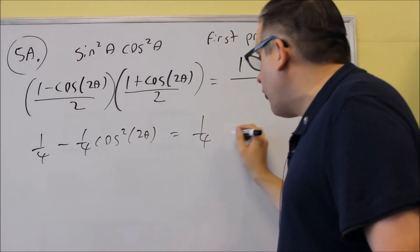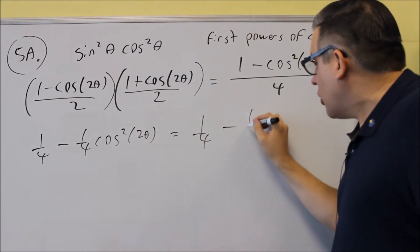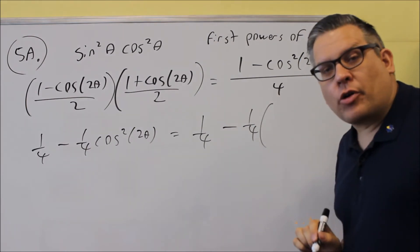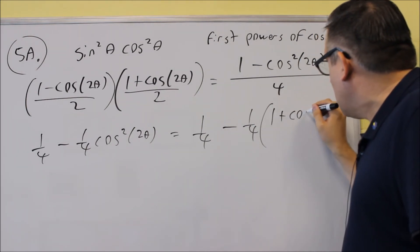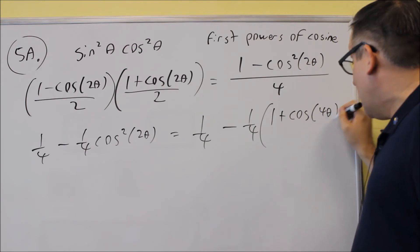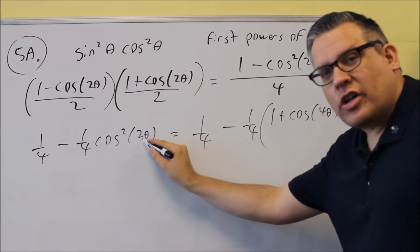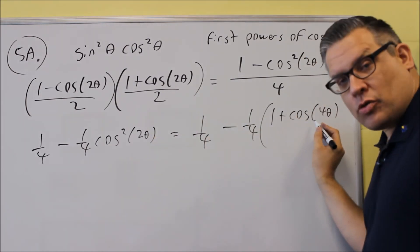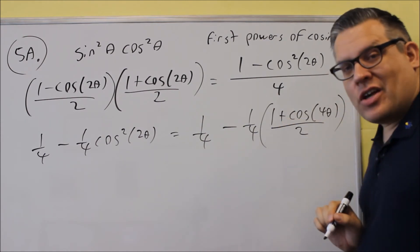So writing that out I get 1 fourth minus 1 quarter and then I'll put the power reducing formula in here which is 1 plus cosine of 4 theta because the original one inside was a 2 theta. This always doubles when you use the formula there and we get this.